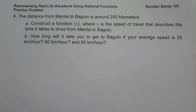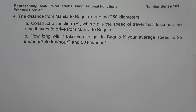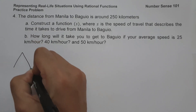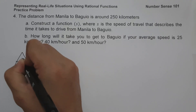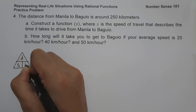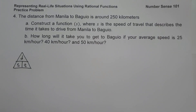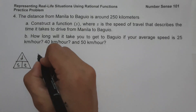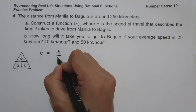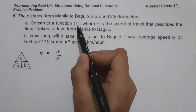On the last example, the distance from Manila to Baguio is around 250 kilometers. On letter A, construct a function S, where S is the speed of travel, that describes the time it takes to drive from Manila to Baguio. Using the distance-speed-time triangle, since we need to express time as a function of speed S, we use time = distance/speed. So T(S) = 250/S, and this is our answer for letter A.